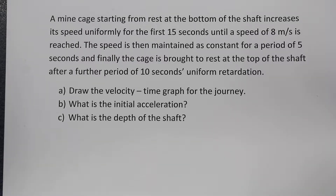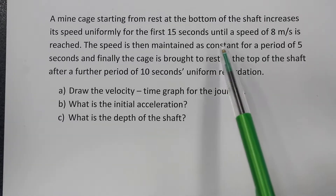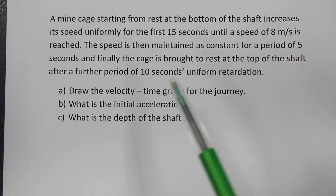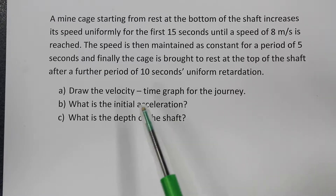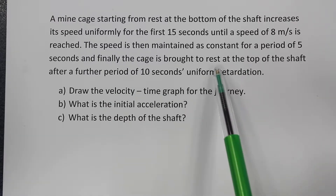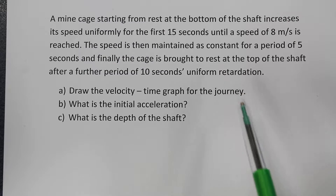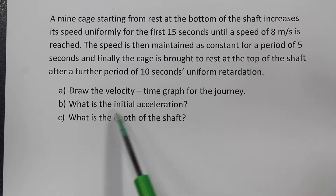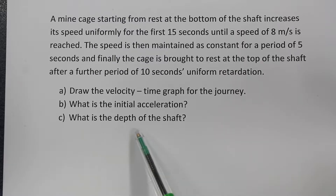In this video I'll be going through the following question. It states a mine cage starting from rest at the bottom of the shaft increases its speed uniformly for the first 15 seconds until a speed of 8 meters per second is reached. The speed is then maintained as constant for a period of 5 seconds, and finally the cage is brought to rest at the top of the shaft for a further period of 10 seconds of uniform retardation. We are asked to draw the velocity-time graph for the journey, find the initial acceleration, and determine the depth of the shaft.